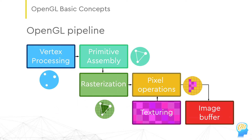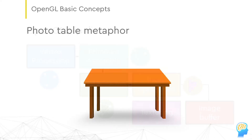Conceptually, the workflow looks like this. We provide OpenGL with geometry like coordinates for our triangles, texture data, and light sources, and ask it to draw the scene. You can think about it in terms of the so-called photo table metaphor.